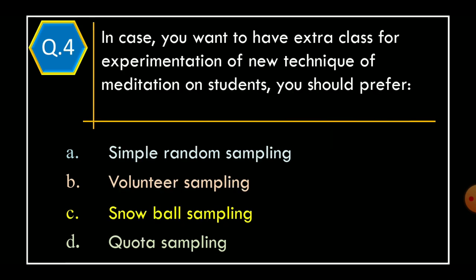Question 4. In case you want to have extra class for experimentation of new technique of meditation on students, you should prefer: Option A, Simple Random Sampling. Option B, Voluntary Sampling. Option C, Snowball Sampling. Option D, Quota Sampling. And correct option is Option B, Voluntary Sampling.